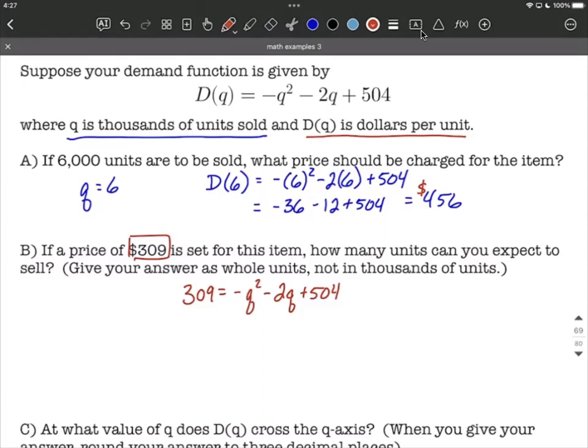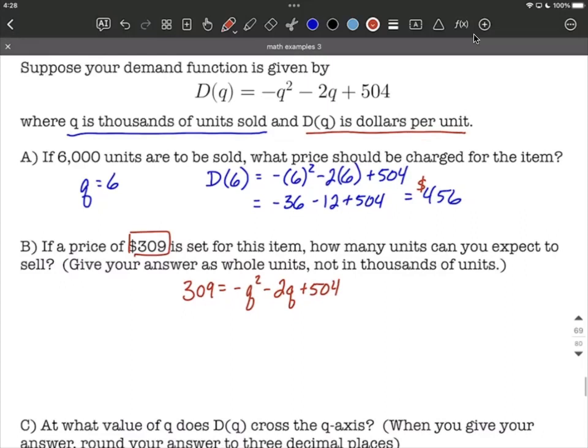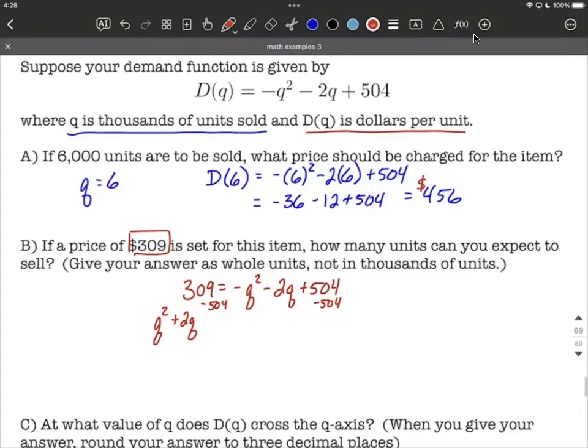So what this has given us is a quadratic equation. Let's try to solve this by first getting everything on one side. I notice we have a negative q squared, our highest power of q. I'm going to move everything to the left-hand side to make that a positive q squared, because I like having my leading coefficient being positive. So I'm adding q squared, adding 2q, and subtracting 504. We have to do the computation 309 minus 504 gives me negative 195, and that'll put zero on the right-hand side.